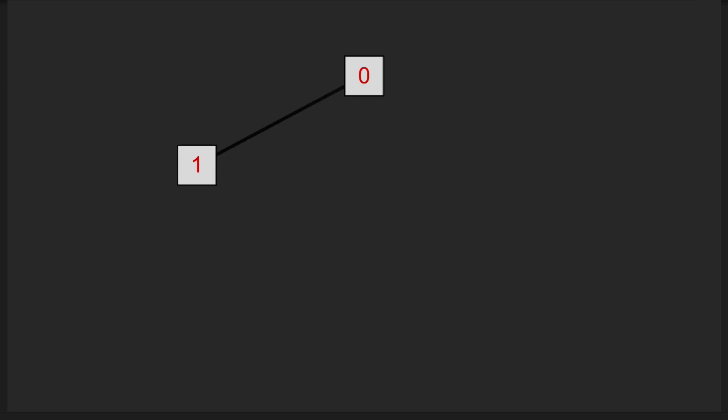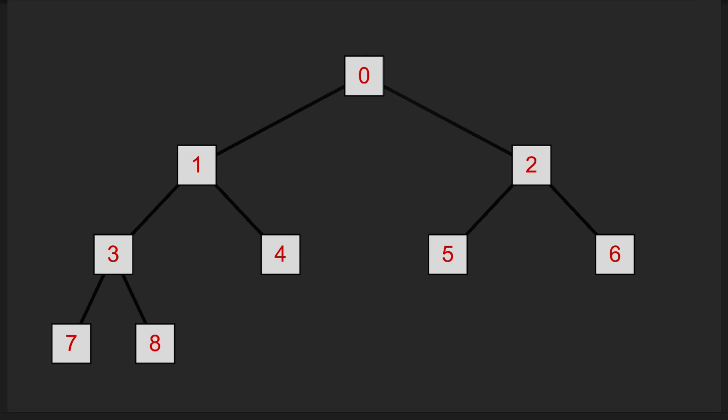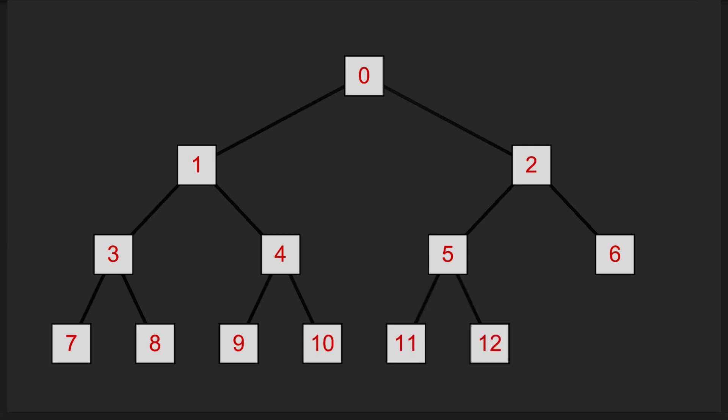The best way to think of a heap is as a sort of binary tree where each node has at most two child nodes, and each of those nodes then have their own two child nodes, and so on. In the actual code, this is simply an array with the elements ordered in the indices from left to right as shown.